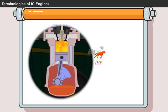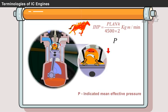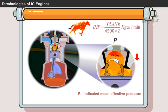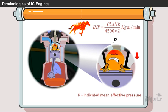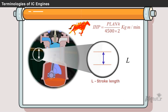The power that is actually developed in the engine cylinder is called indicated horsepower. It is given as IHP is equal to PLANK divided by 4,500 into 2. Where P is the average pressure produced in the combustion chamber, which is called as indicated mean effective pressure.